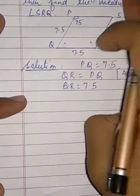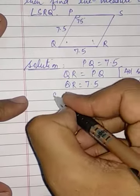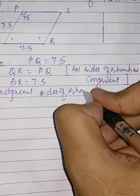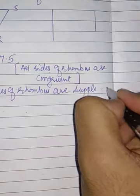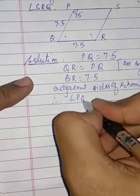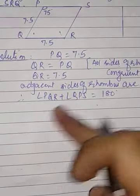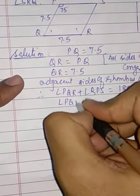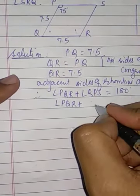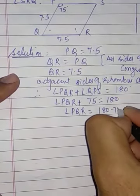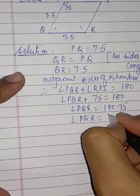Now, we also need to find angle PQR and angle SRQ. We know that adjacent angles of a rhombus are supplementary, meaning their sum is 180 degrees. So angle PQR plus angle QPS equals 180 degrees. Since QPS is given as 75 degrees, angle PQR equals 180 minus 75, which is 105 degrees.